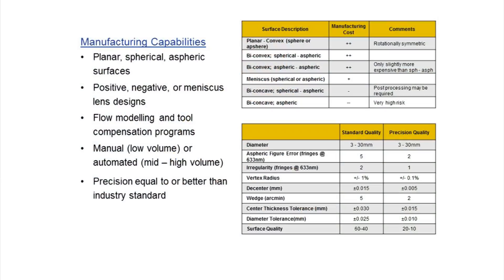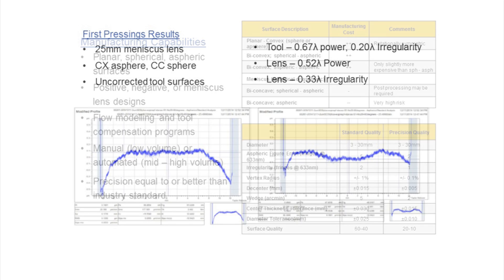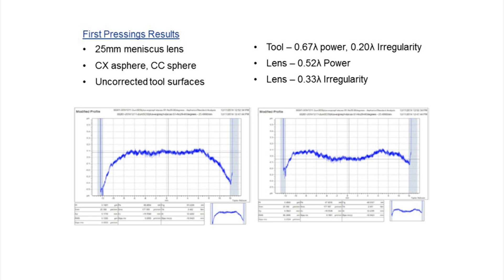Our molding capabilities cover just about any shape needed. We mold planar, spherical, aspheric, and now diffractives as well. The tolerances on those are well within standard industry practice for molded articles. As an example of what we've molded in Tucson: a 25 millimeter diameter asphere that we consistently mold to about a half wave of power and about a third wave of irregularity, which is quite good.